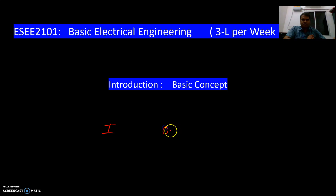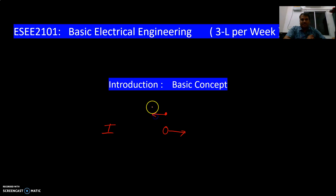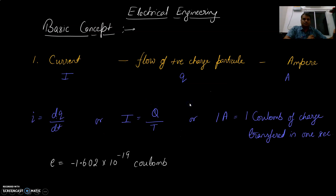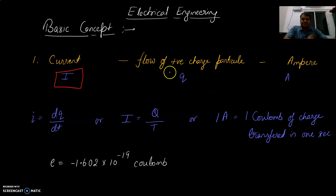What is current? It is the flow of holes. The flow of holes in a desired direction is the current, and the flow of holes is opposite to the flow of electrons. So the current — the nomenclature is I — is the flow of positive charge particles, or we can say the rate of flow of positive charge particles.